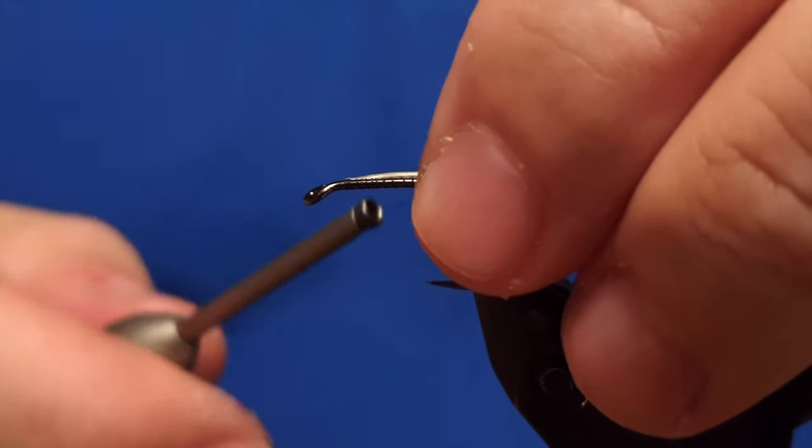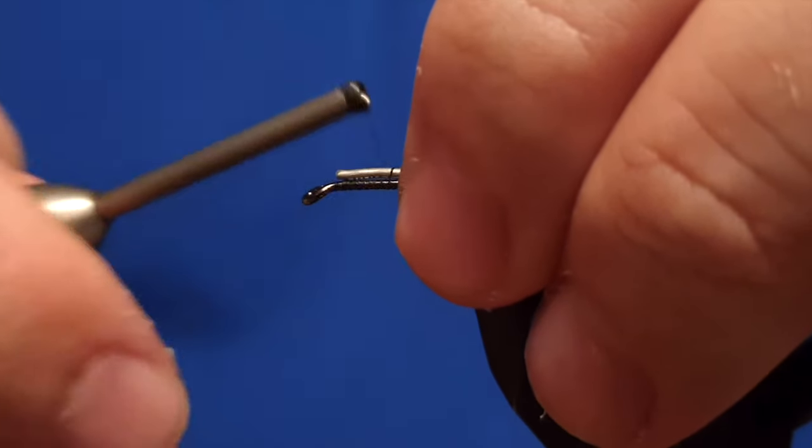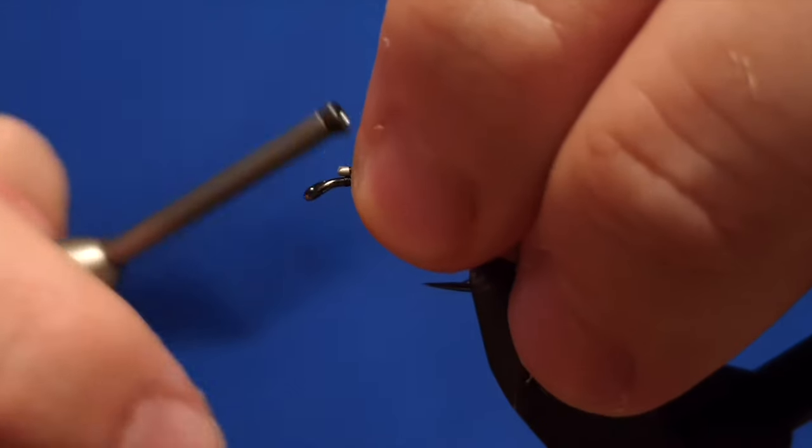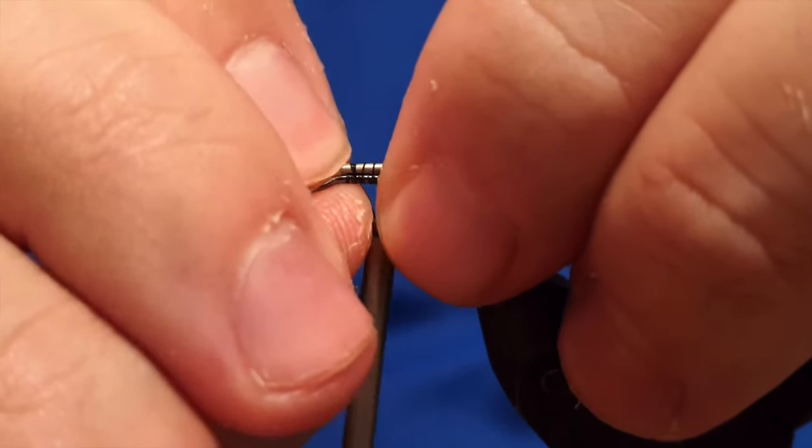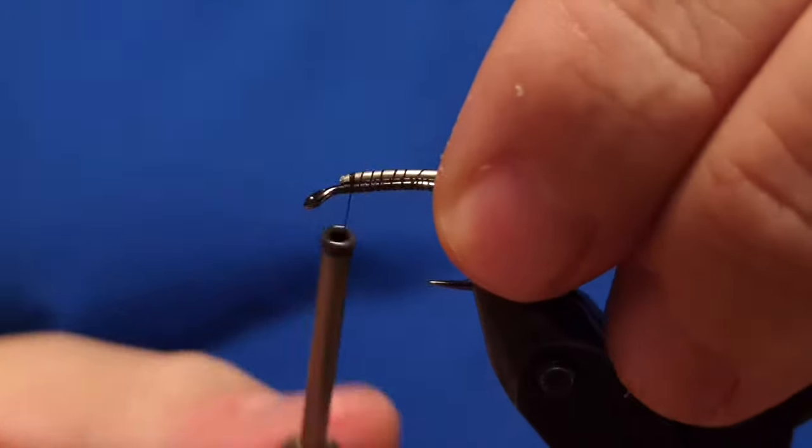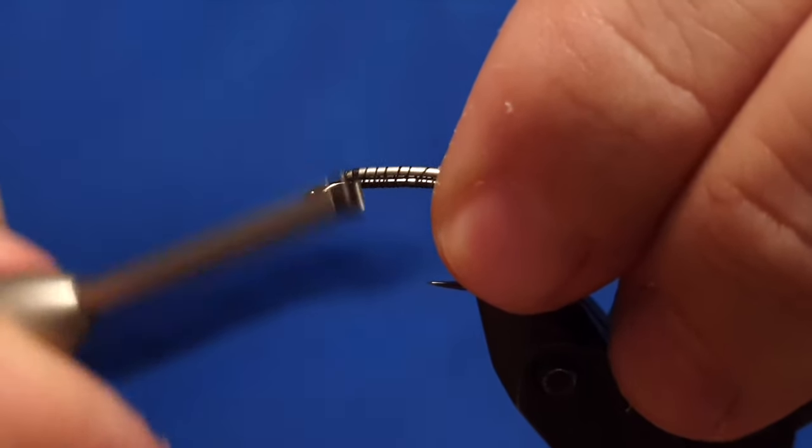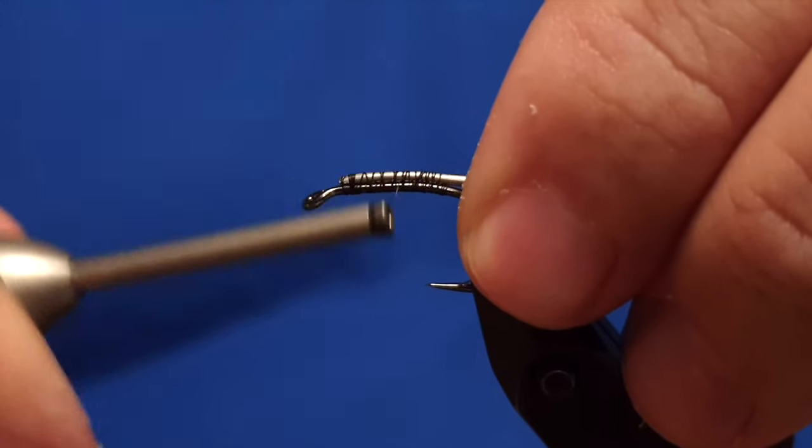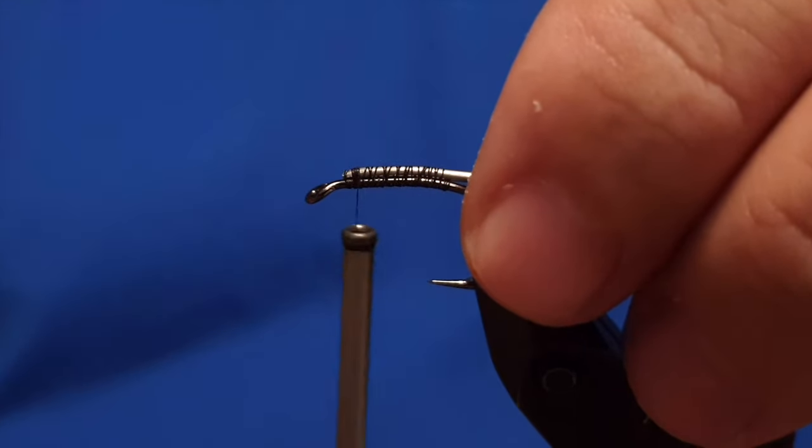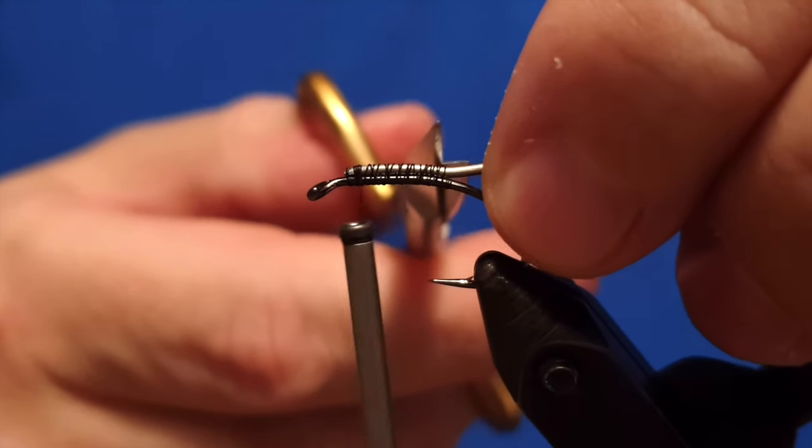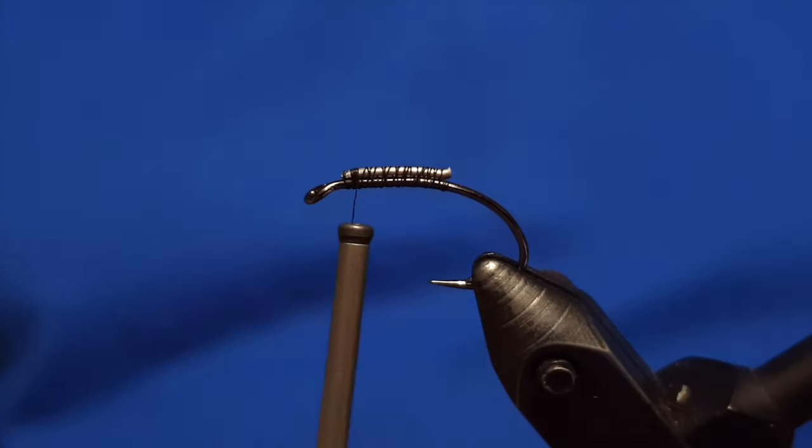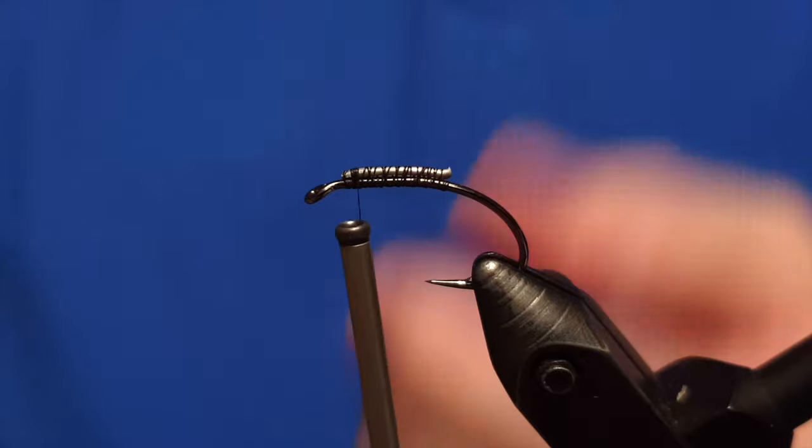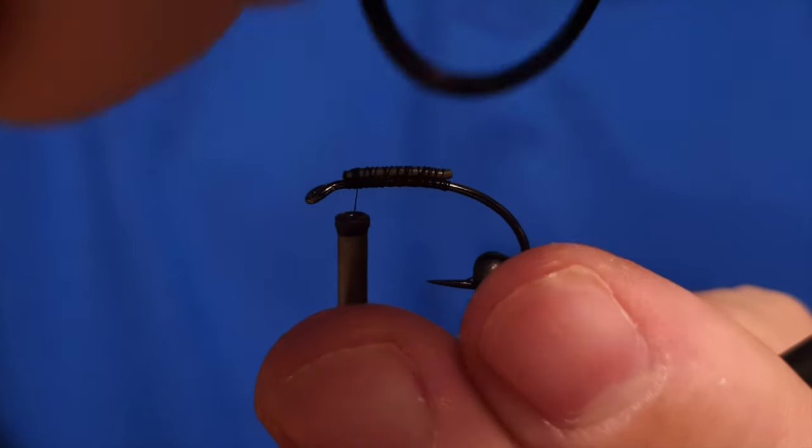First of all, we have to attach the thread to the shank. Next step is to take this thick lead wire and attach that to the shank of the hook. Make sure it's weighted on the back. It's very important the weight must be on the back of the fly so it turns upside down when you fish with it.